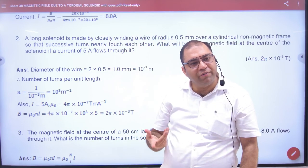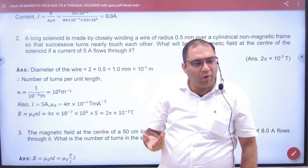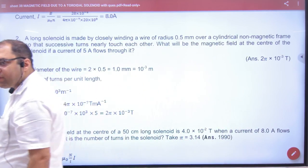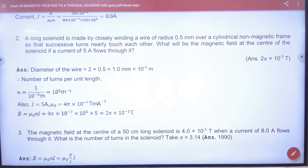That's all. The rest is straightforward. B is μ₀ni. Put the number of turns per unit length and the answer is done. That's all, this was the trick.